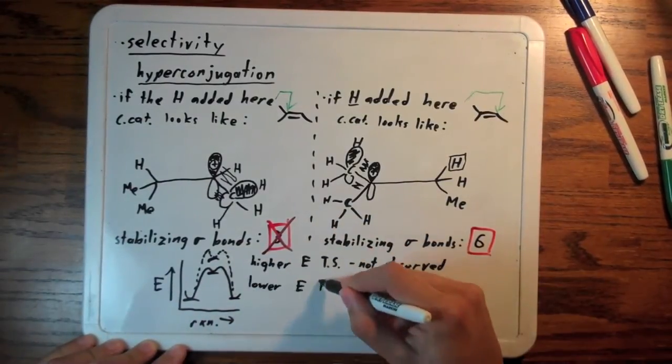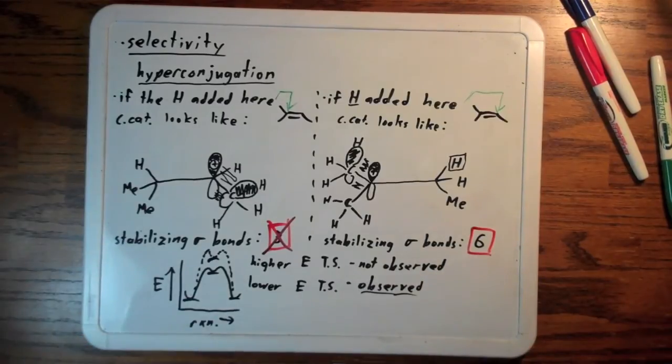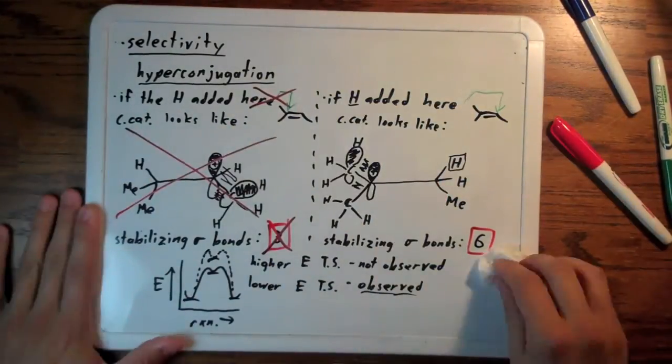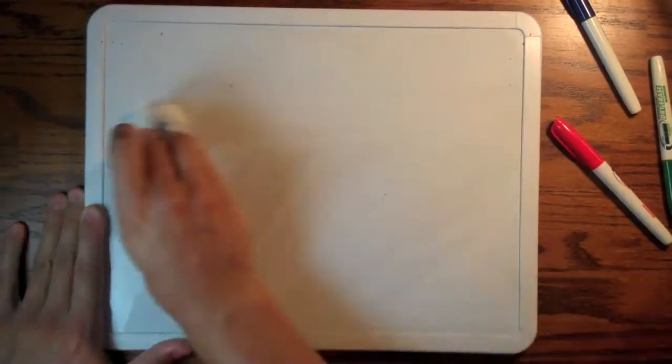So to summarize, Markovnikov's rule says H is added to where there are more H's because of hyperconjugation. Thanks for watching.